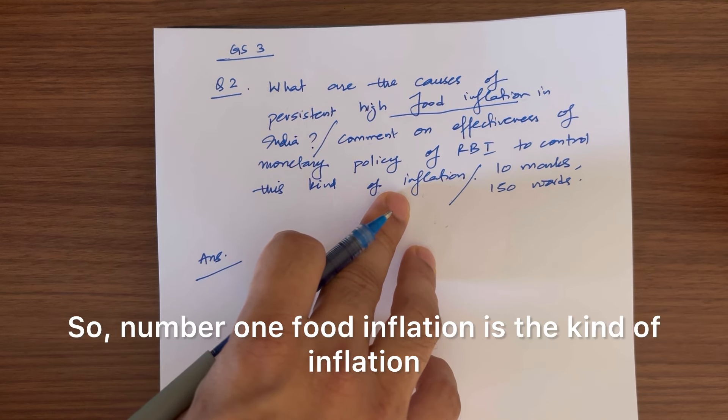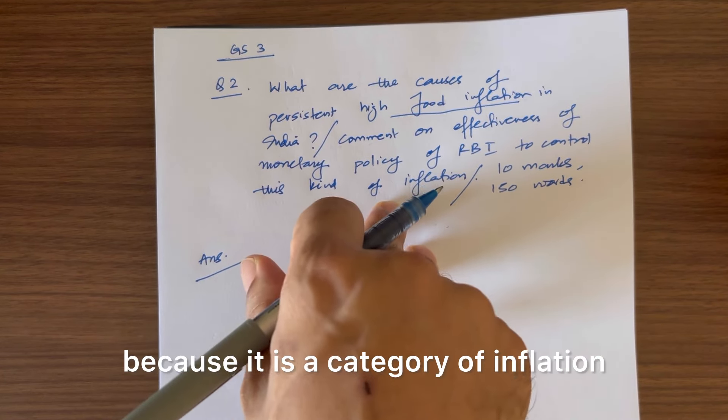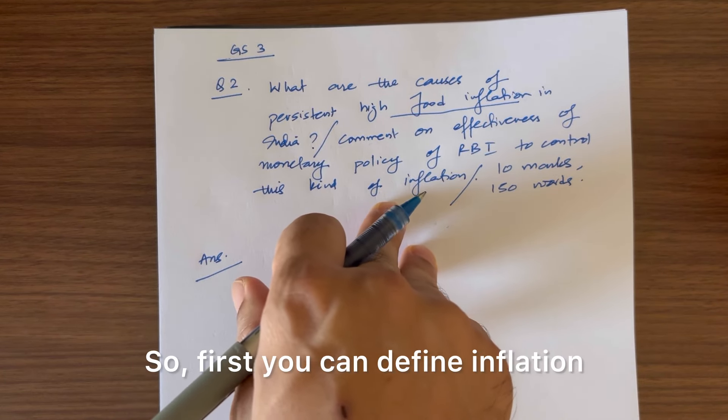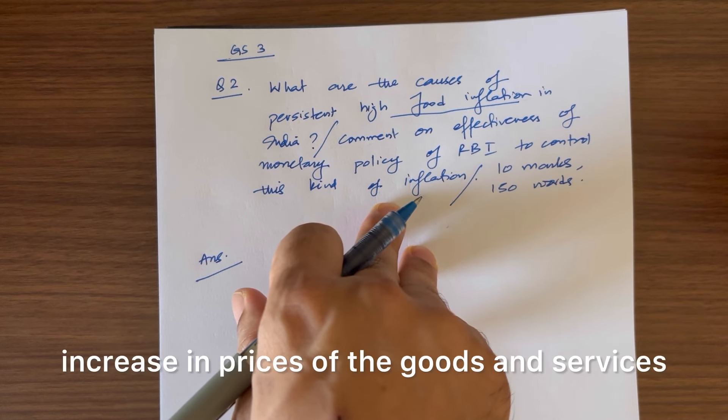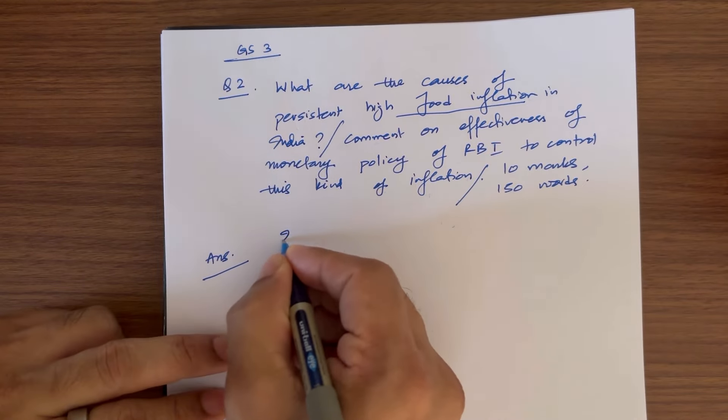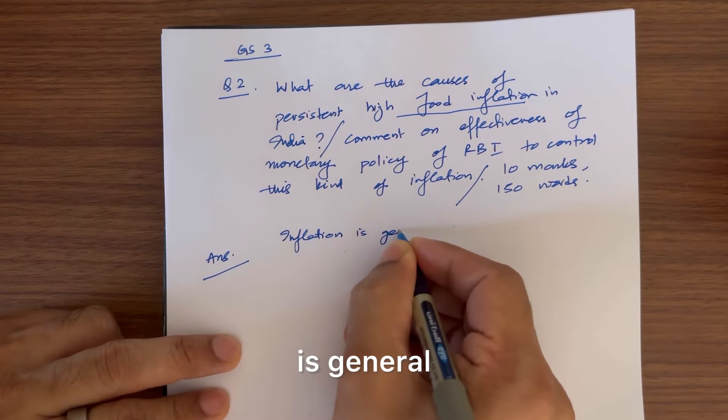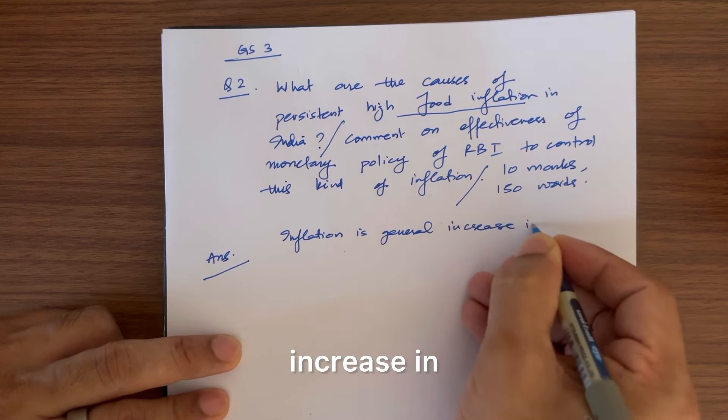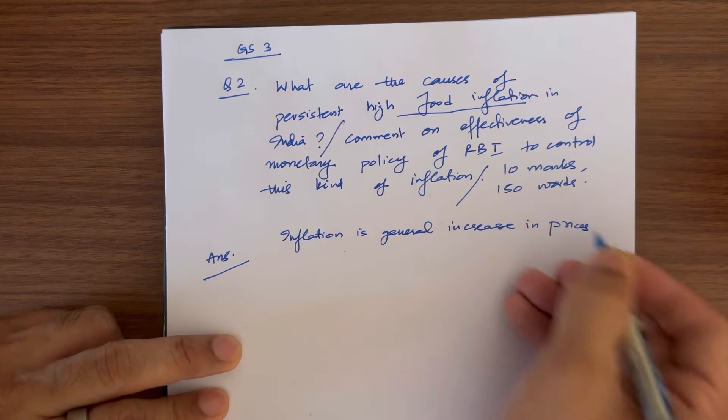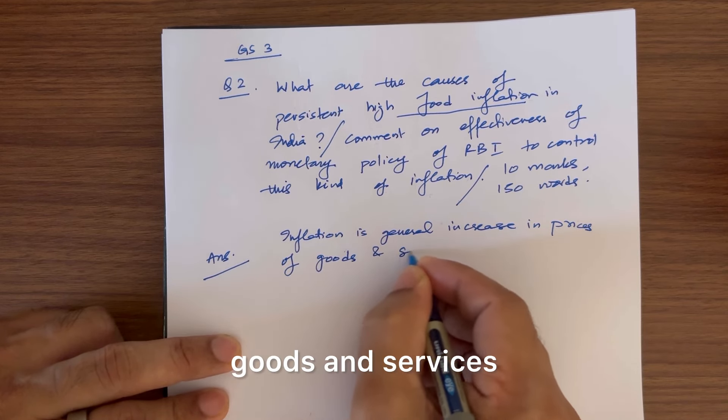Number one, food inflation is different because it is a category of inflation. First you can define inflation. Inflation is the general increase in prices of goods and services.